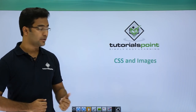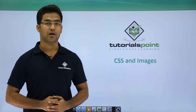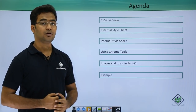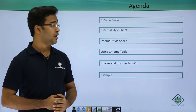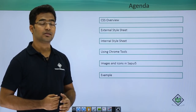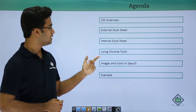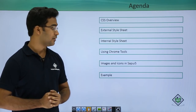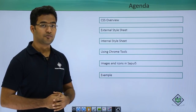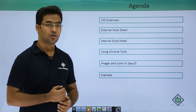In this session, we will be having a look at CSS and images and how to use them in an SAP UI5 application. Let us see the agenda for this session. First, I will cover the overview of CSS, and then there will be 3 methods for using CSS in our SAP UI5 program: external style sheet, internal style sheet, and using Chrome tools. Then I will show how to use images and icons in SAP UI5, and conclude with an example.